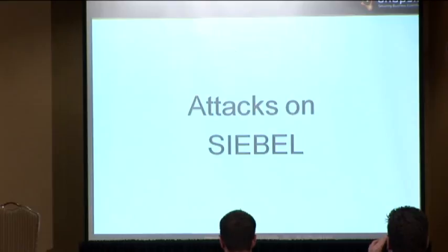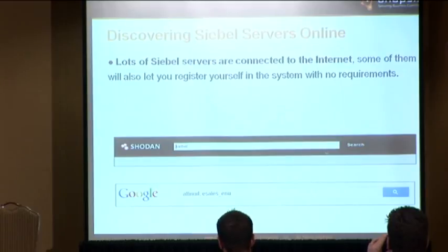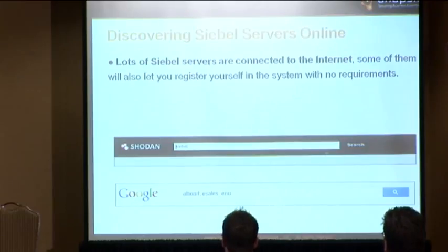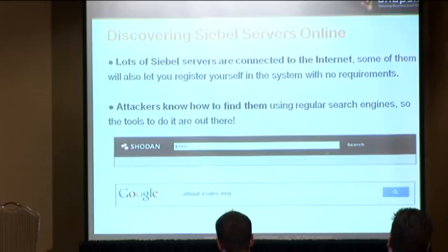Getting more technical: Siebel systems are online, and attackers know that. Most Siebel instances let you register with just a name, last name, and email — no extra approval needed. Attackers can find these systems using Shodan; just type 'Siebel' and you'll see many systems directly connected to the internet. You can also use Google dorks — for example, to find the sales module of Siebel in English — it's that simple.